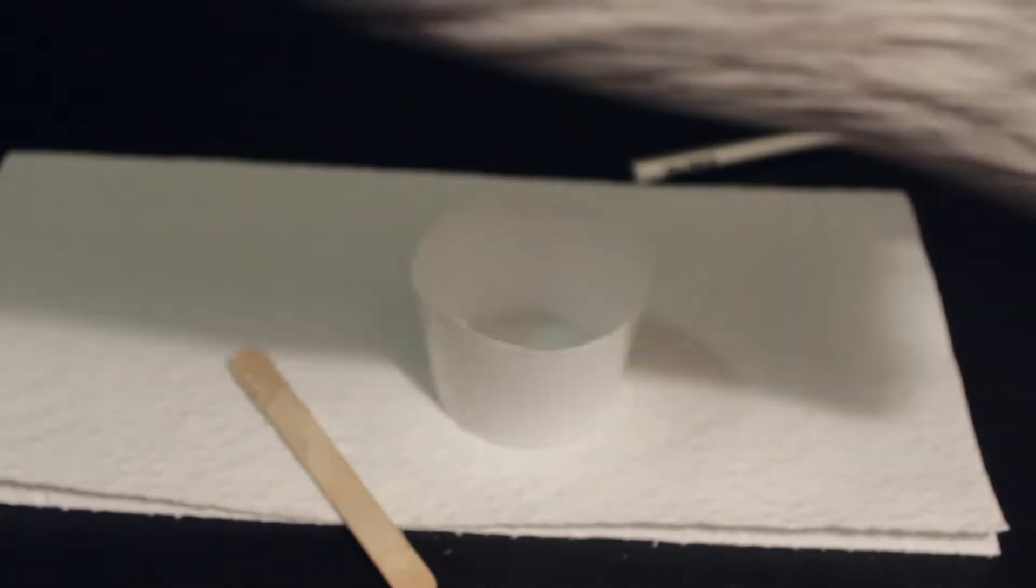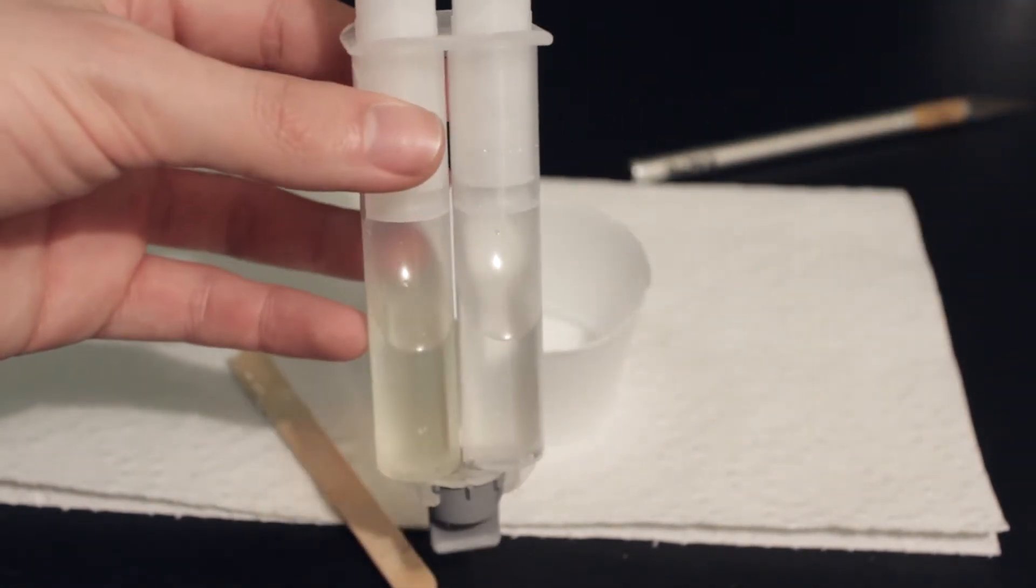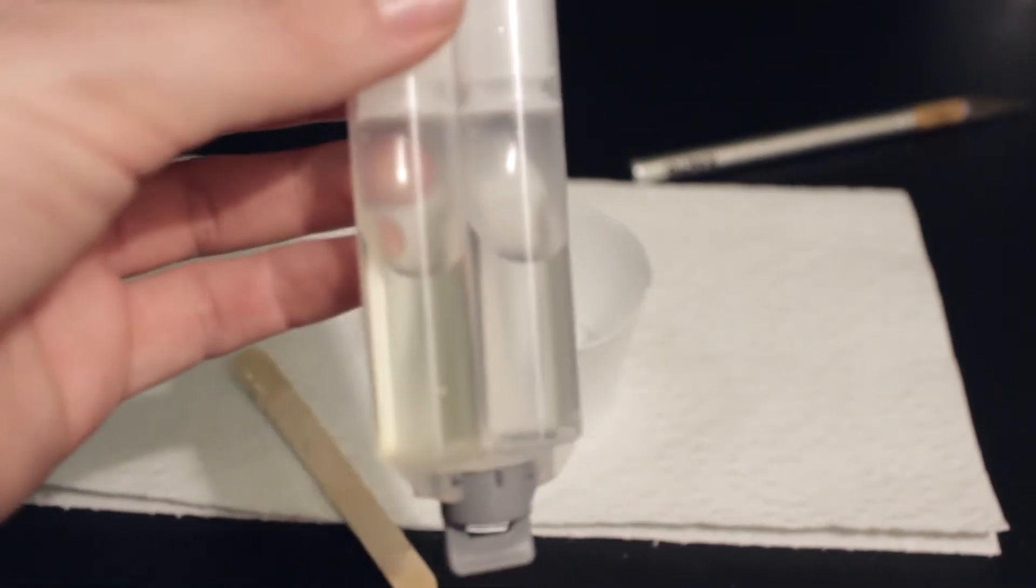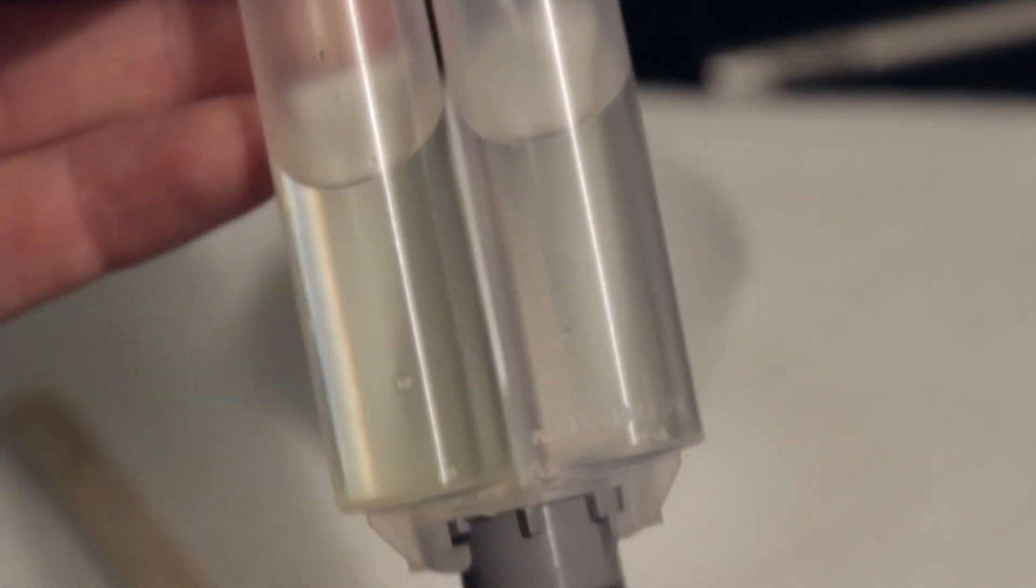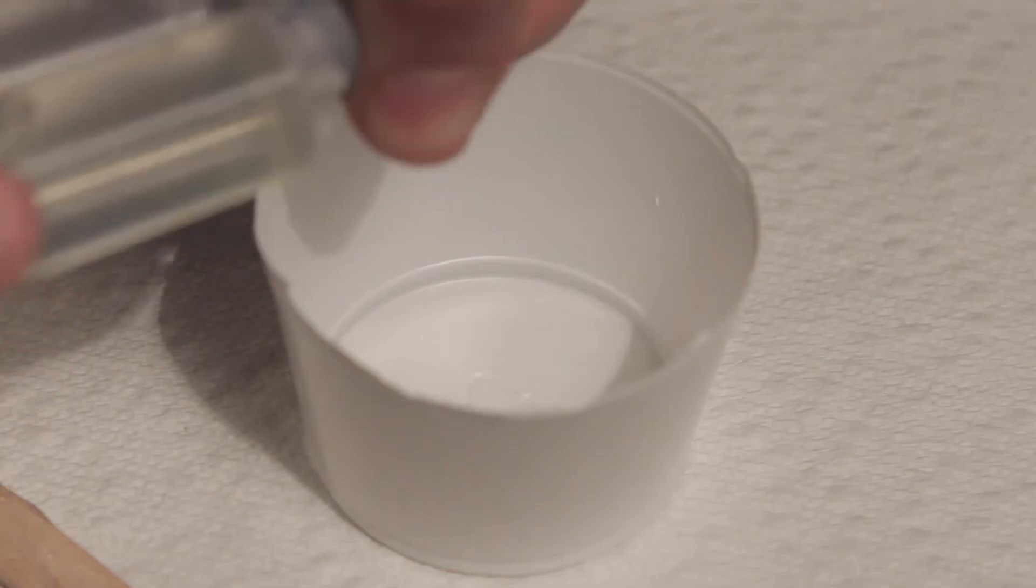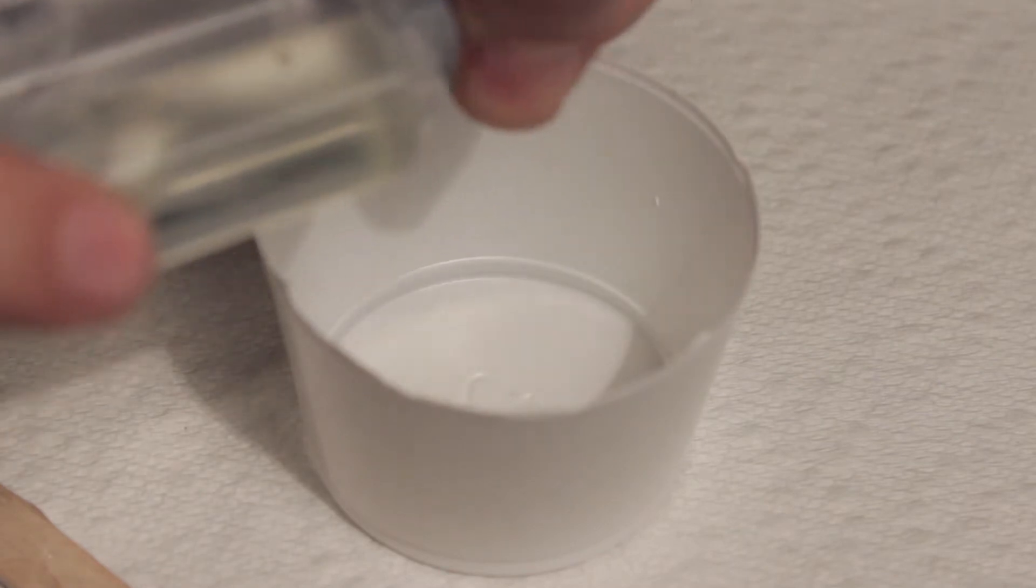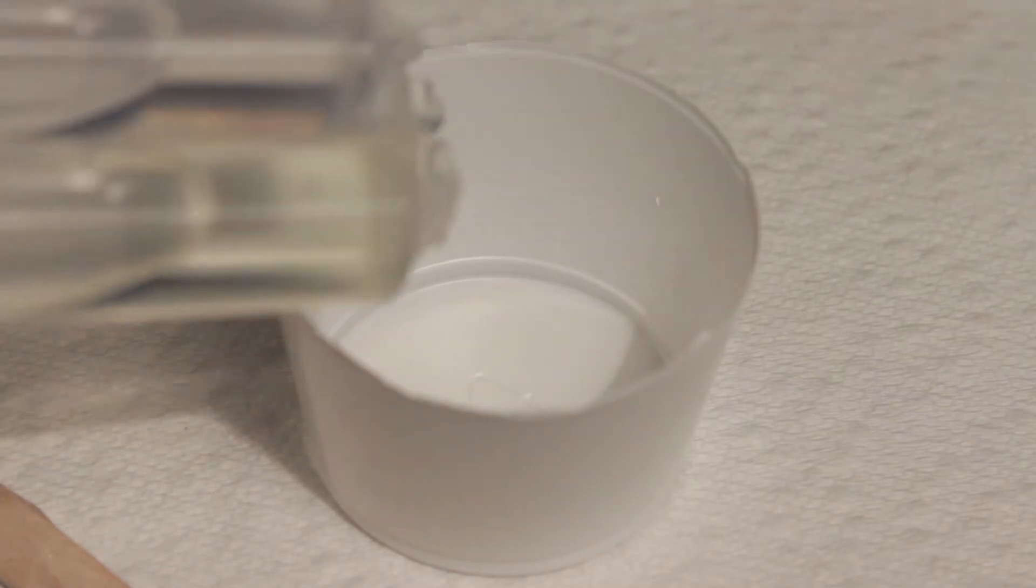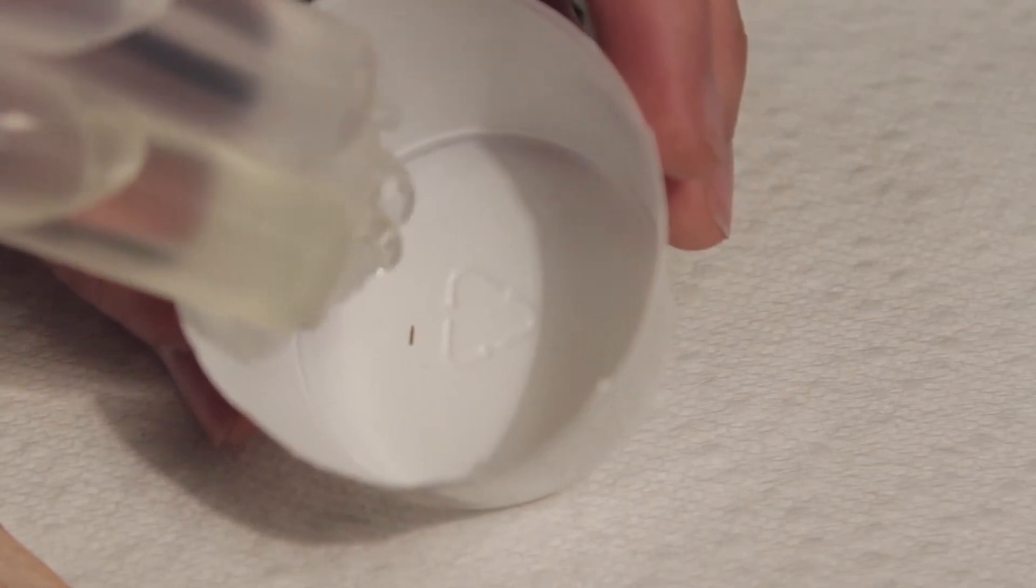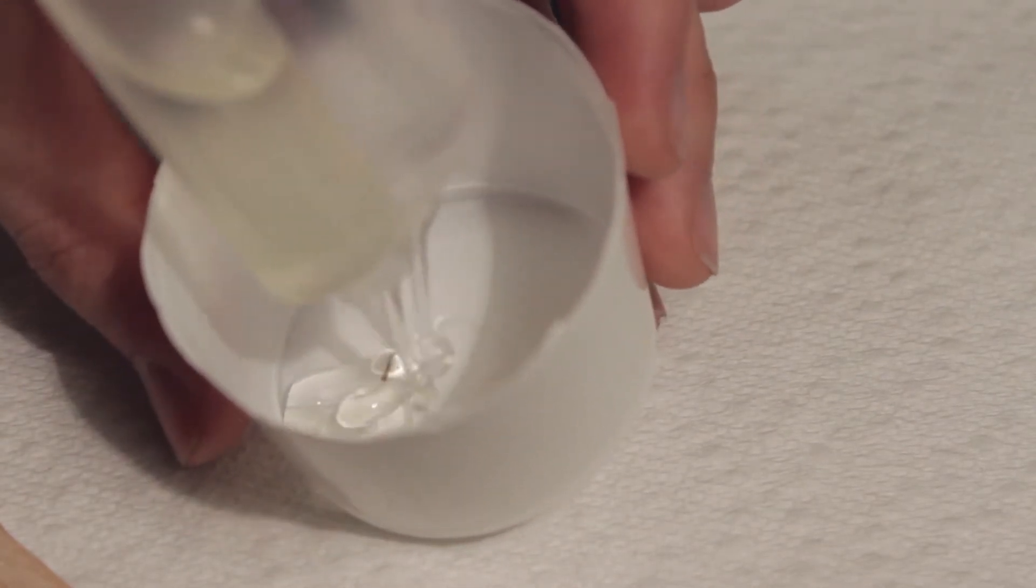So next you're going to take a cup and your epoxy. I've already done a test run, so I know what to expect. You essentially have these two tubes here, one of them is the hardener and the other one is the resin. When they mix together, it creates this really hard epoxy. I might not be correct on some terms, but essentially it creates a really hard plastic once you spread it over.